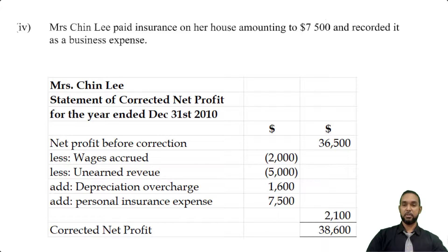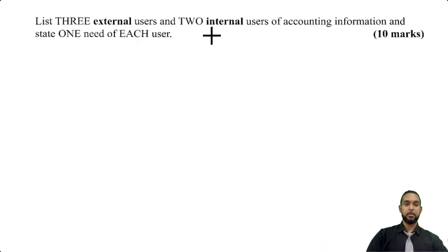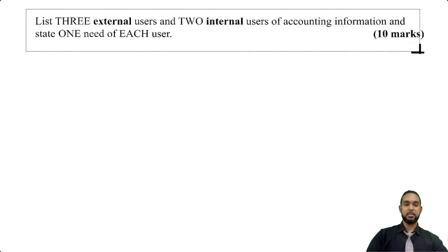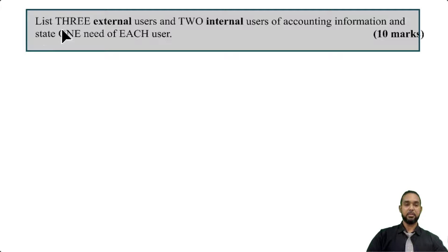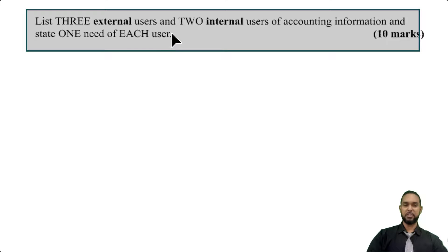There's one more piece to this question. We are to list three external users and two internal users of accounting information, and state one informational need of each user.